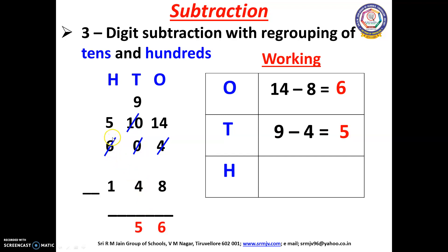Now we are going to do the 100's place. Here we have 5 and 1. We can subtract 5 minus 1. Open your fingers: 1 after — 2, 3, 4, 5. How many fingers have you opened? Yes, we have opened 4 fingers. So we have to write 4 here. The difference between 604 and 148 is 456.